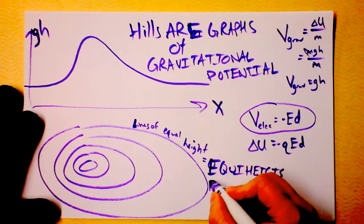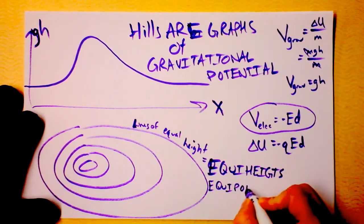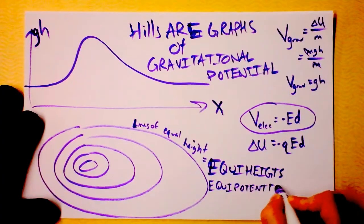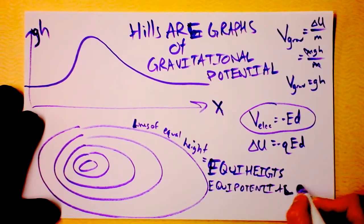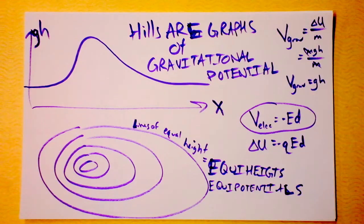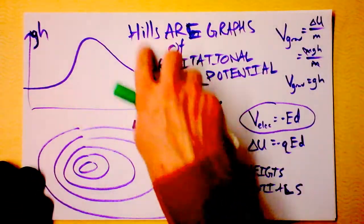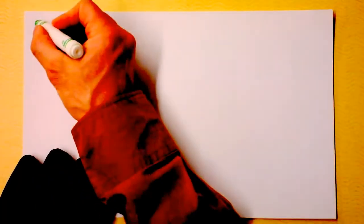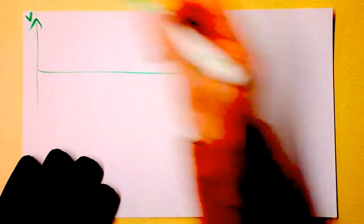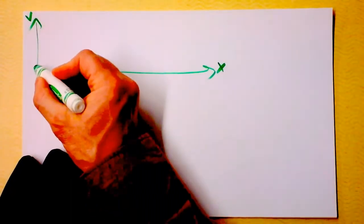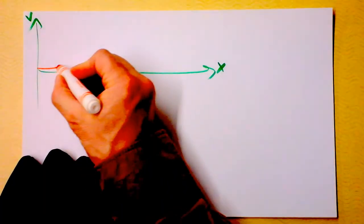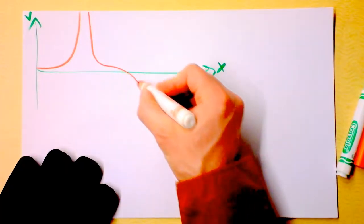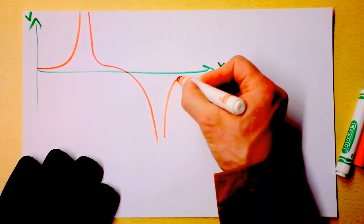Or you want to be even fancier, you could call them equipotentials. We're going to do the exact same thing with electricity. You've already seen a graph of an electrical hill very much like this, and we could make a topographical map from it. The electrical hill we recently discussed had potential as a function of location — one line went up like this, and another line went down like this.